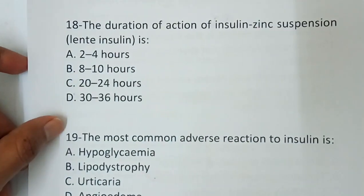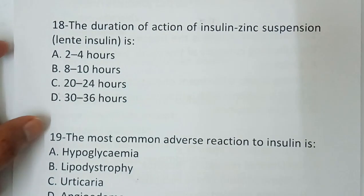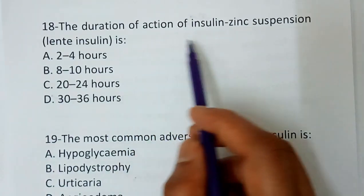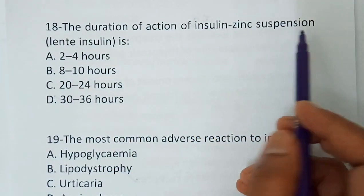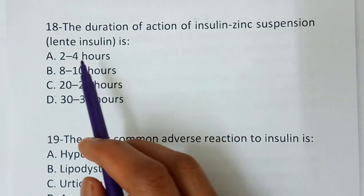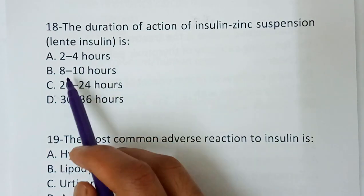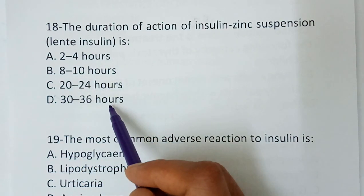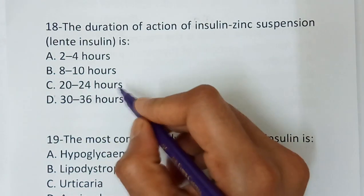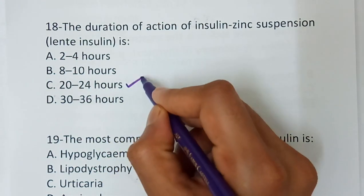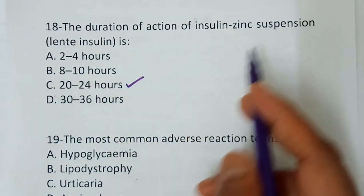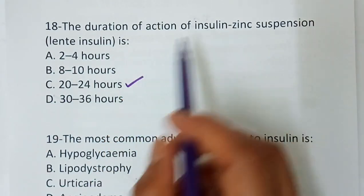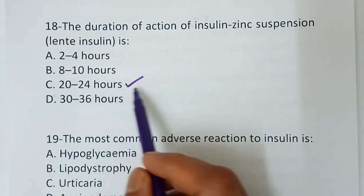Question number 18 — the duration of action of insulin zinc suspension, that is lente insulin, is: option A, 2 to 4 hours; option B, 8 to 10 hours; option C, 20 to 24 hours; option D, 30 to 36 hours. The correct answer is 20 to 24 hours. Lente insulin has a duration of action of 20 to 24 hours.